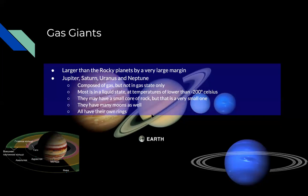Ring system means — you see how Saturn has it? It's a massive ring. So each one of the gas giants has their own ring. It's just not as visible as Saturn's.